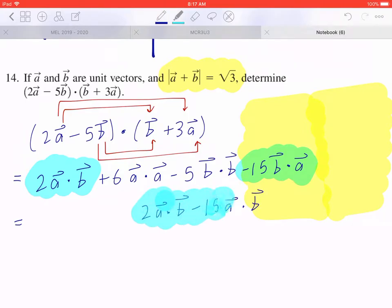Now if you look at the middle two terms, by definition or by the magnitude property, a · a just means the magnitude of a squared. Likewise if you look at b · b, by the magnitude property, that's going to be the magnitude of b squared.